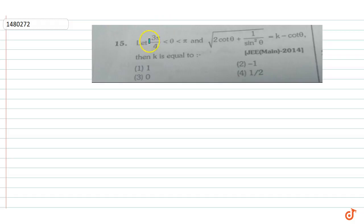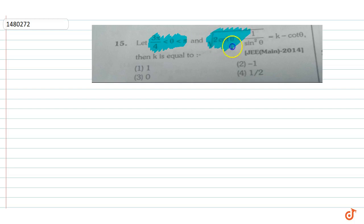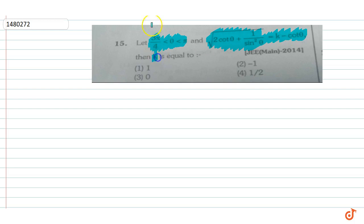The question given is: let 3π/4 < θ < π, and √(2cotθ + 1/sin²θ) = k − cotθ. We have to find the value of k.